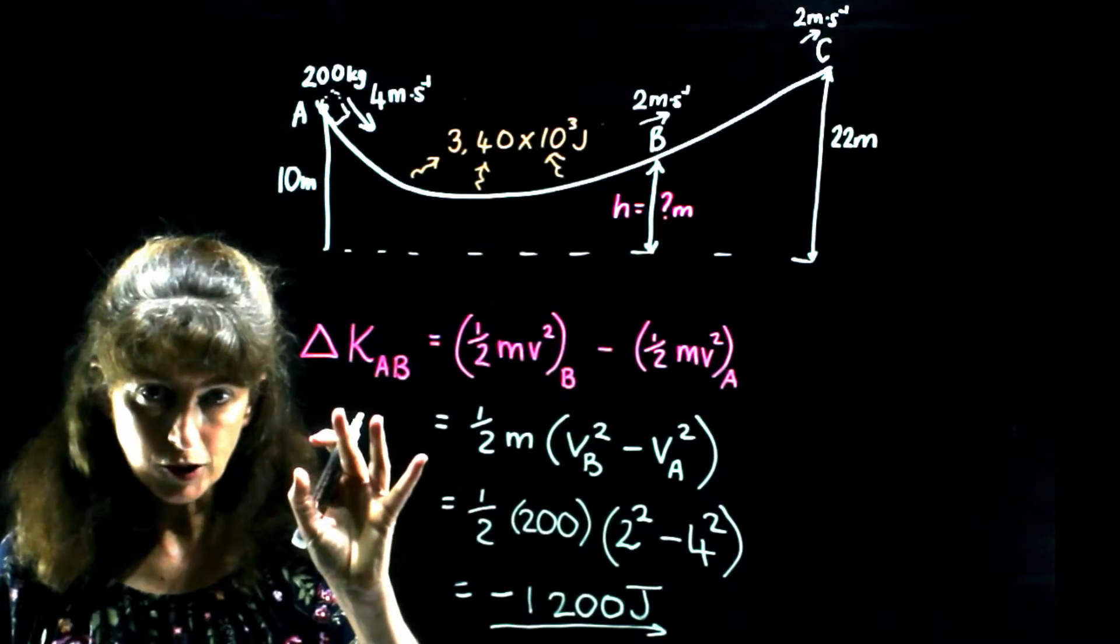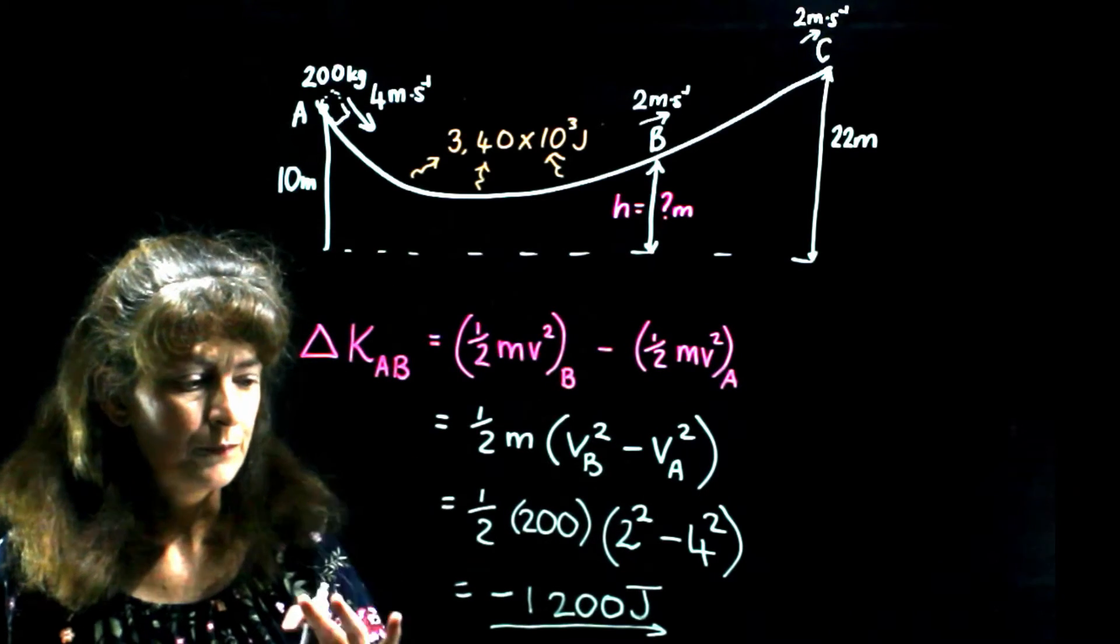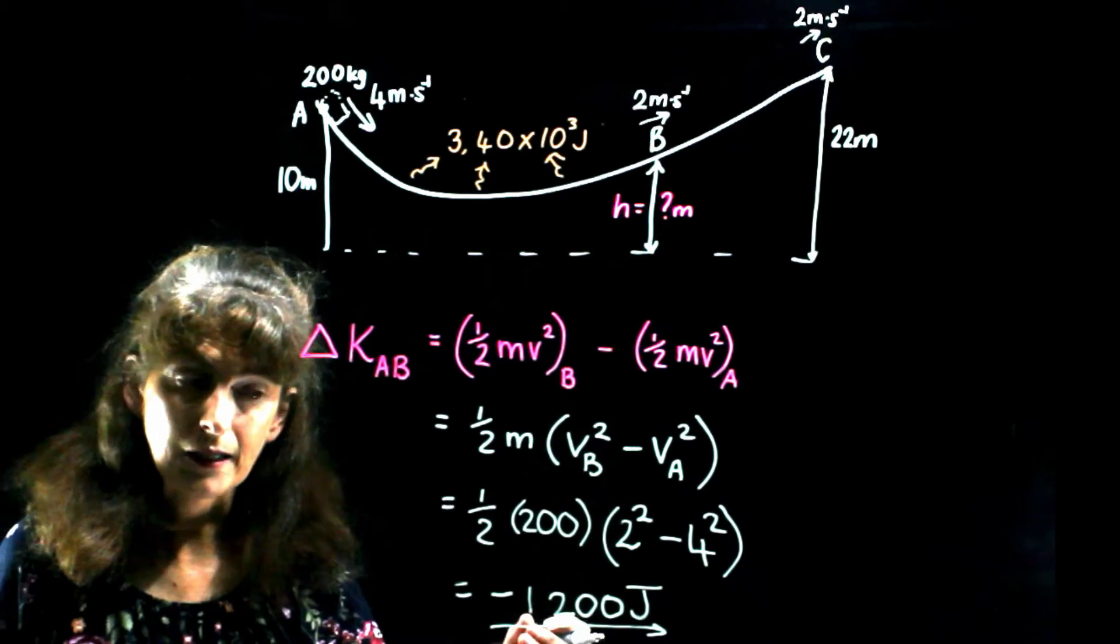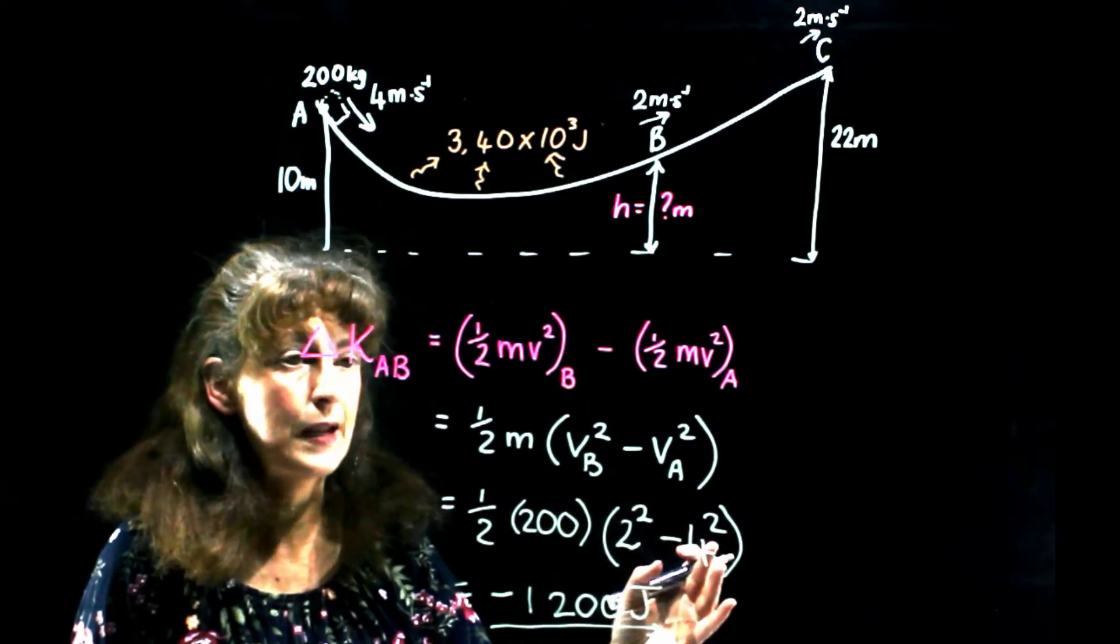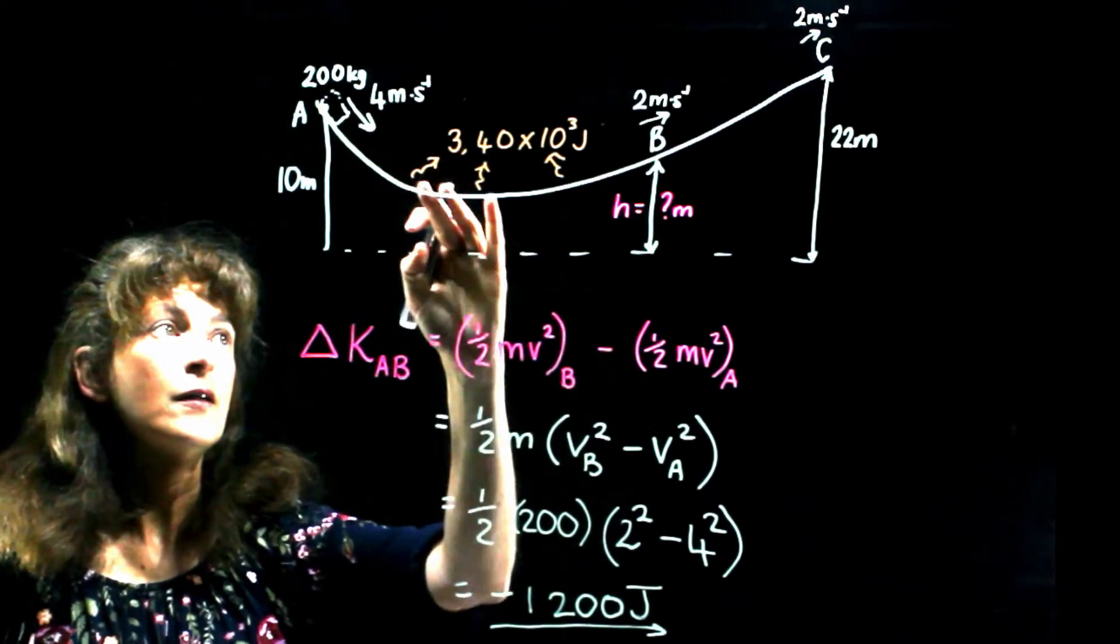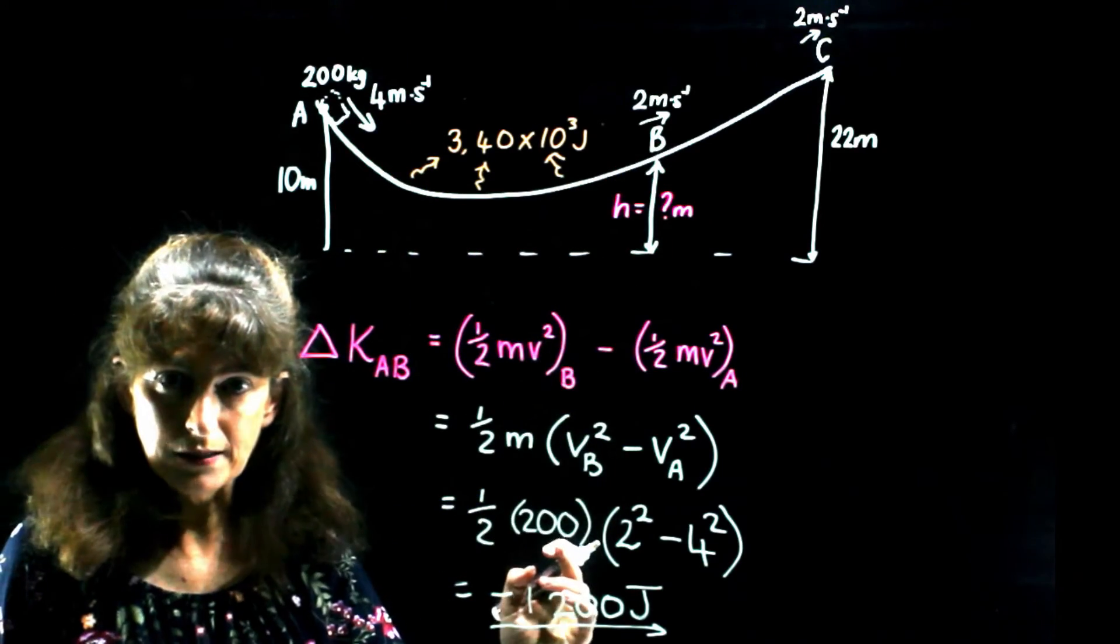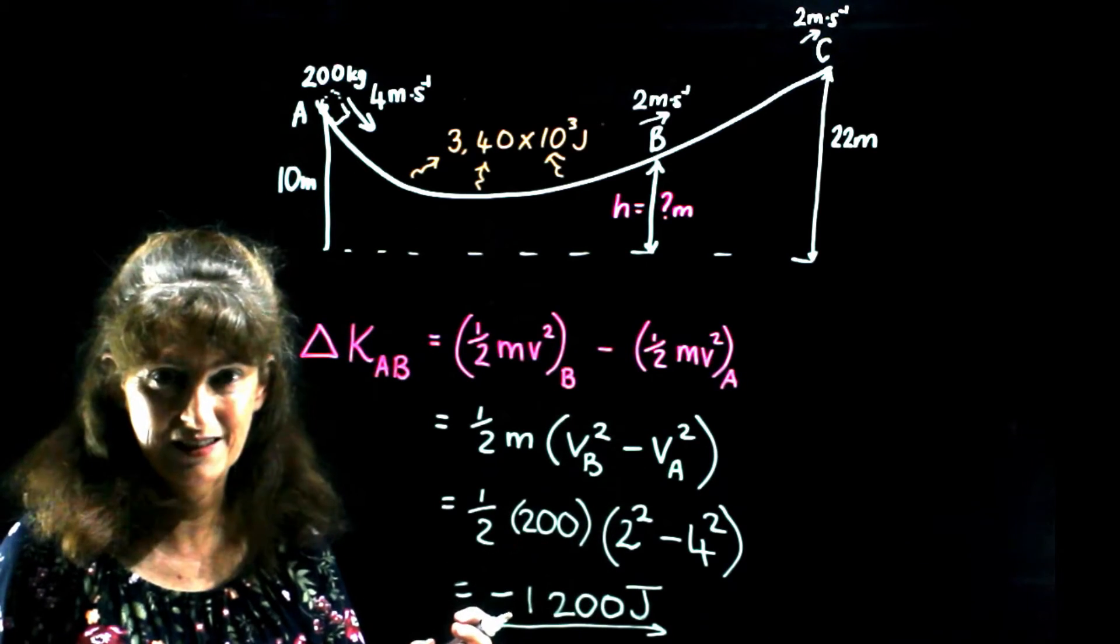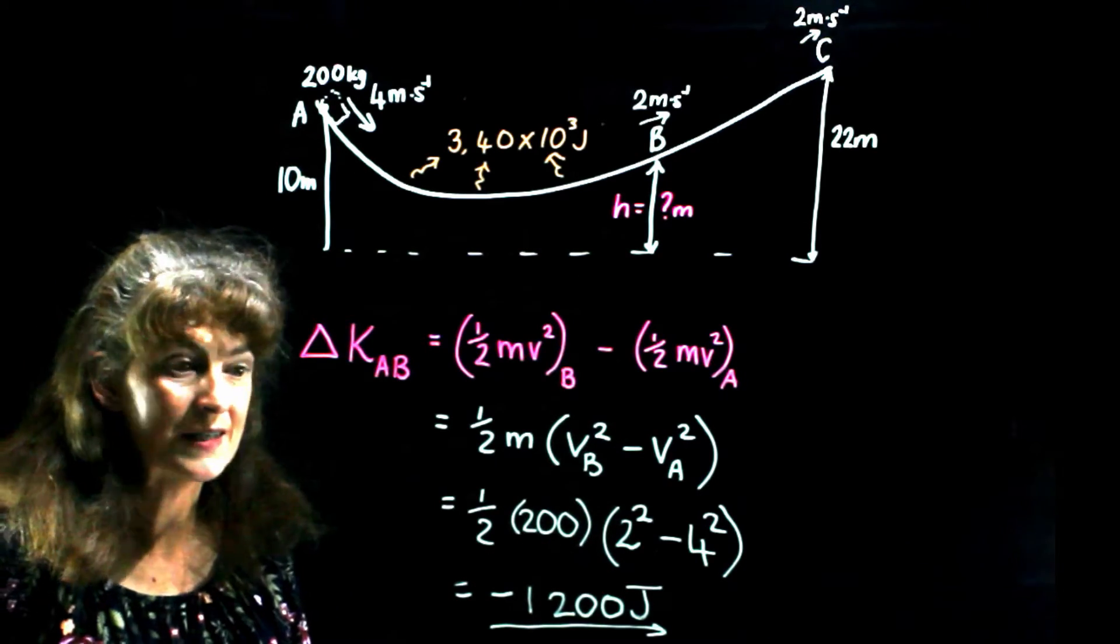Energy is a scalar. That does not mean direction. That means a decrease in kinetic energy, which makes complete sense because we can see that the speed has decreased. So the kinetic energy has certainly also decreased.